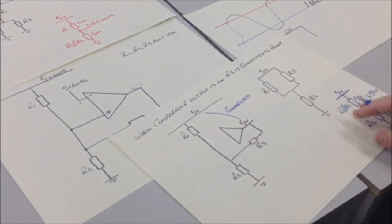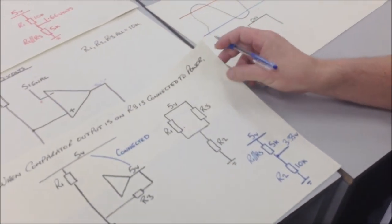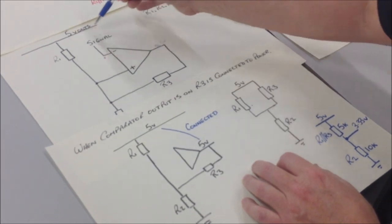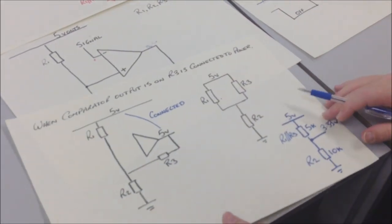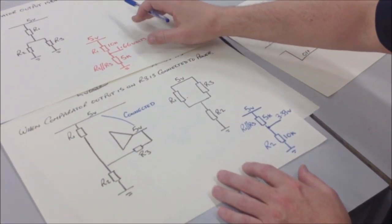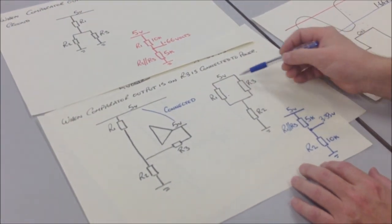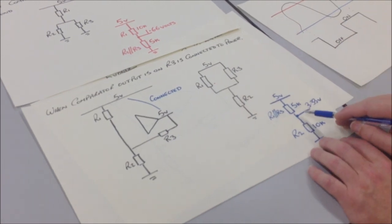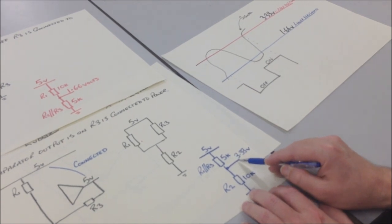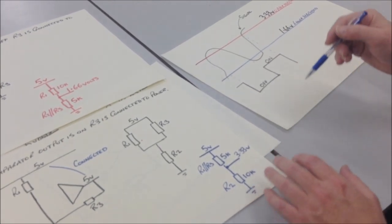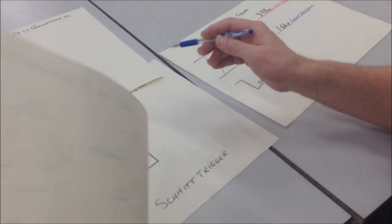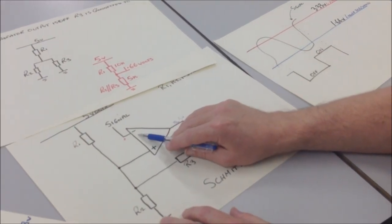And we have the opposite situation. It's as if R1 and R3 are connected to 5 volts. So we get a voltage divider that's the exact opposite of the other voltage divider here. And the voltage at the threshold becomes 3.33 volts.